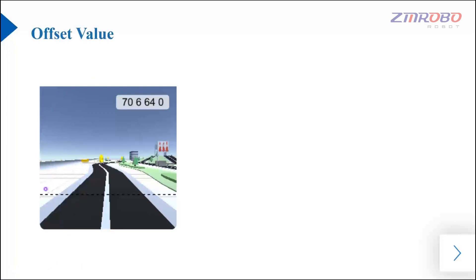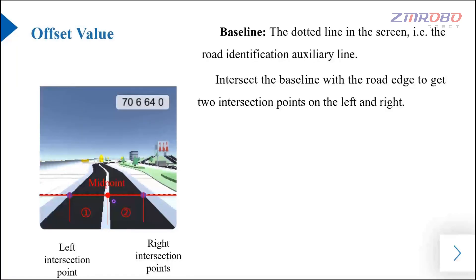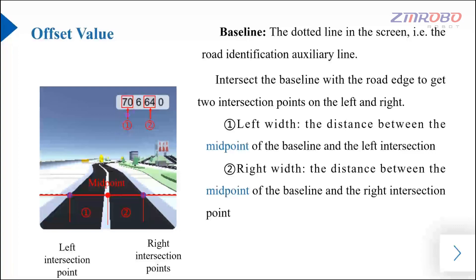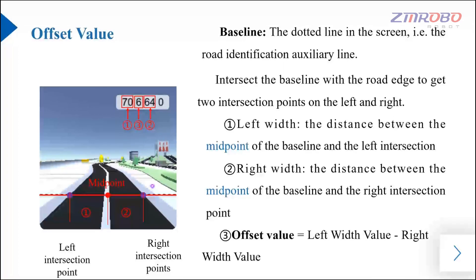On the data window of the AI vision module, you can see a dotted line called the baseline, which is the auxiliary line for road recognition. Intersecting the baseline with the road edge gives two intersection points. The midpoint of the baseline is the center reference. The left width value is the distance between the midpoint and the left intersection point. The right width value is the distance between the midpoint and the right intersection point. The offset value is obtained by subtracting the left width value from the right width value.